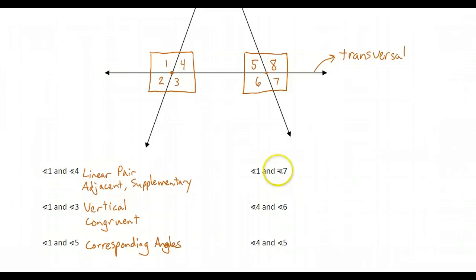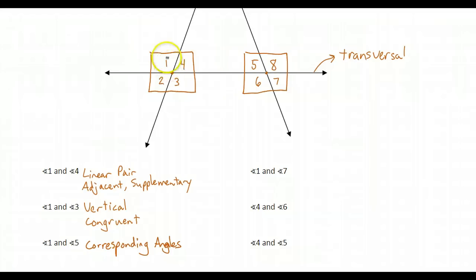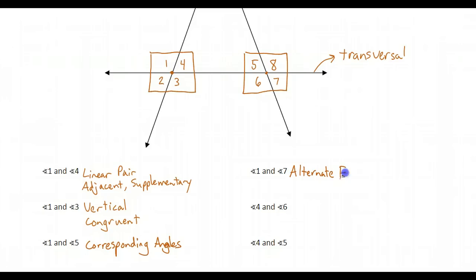If we look at one and seven: one and seven are both outside the two lines, so they're exterior angles. Angle one is above the transversal and angle seven is below the transversal, so they're on opposite sides. They are alternate exterior angles. One and seven aren't the only pair — two and eight are also alternate exterior angles.